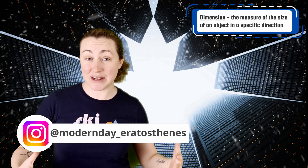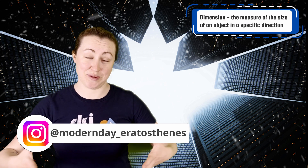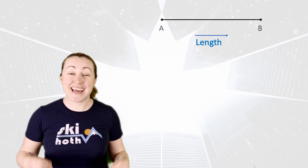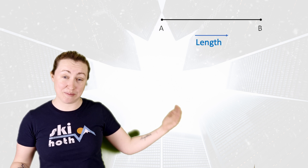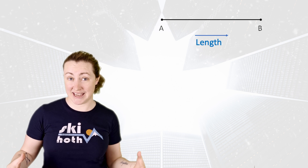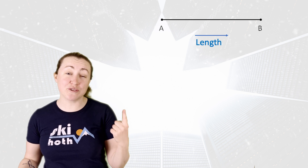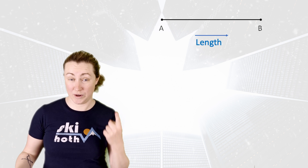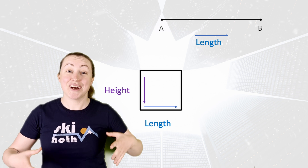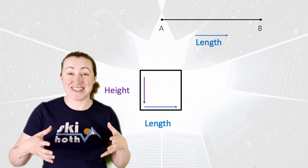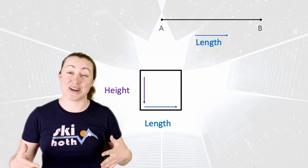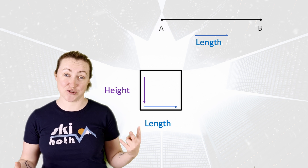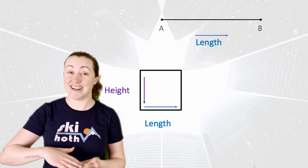In mathematics, a dimension is a measurement of space — how big is a thing? A line segment is point A to point B, which is length. That is one unit of measurement: one-dimensional. A square is two-dimensional, or 2D, and so has two units of measurement: length and height.